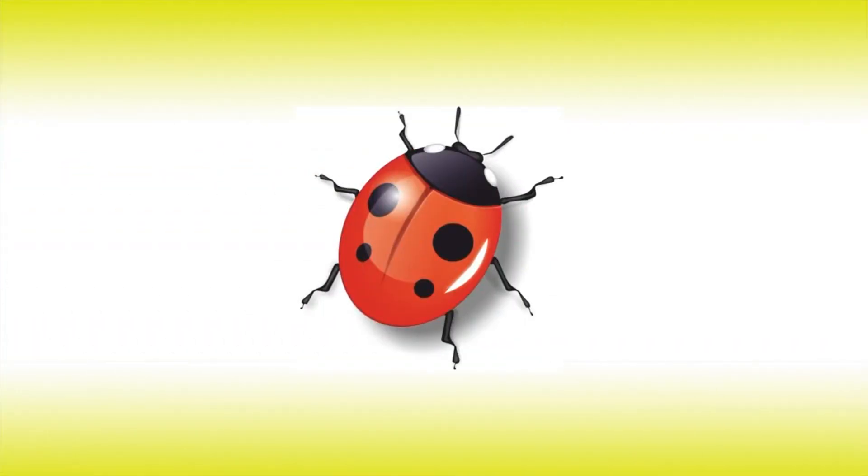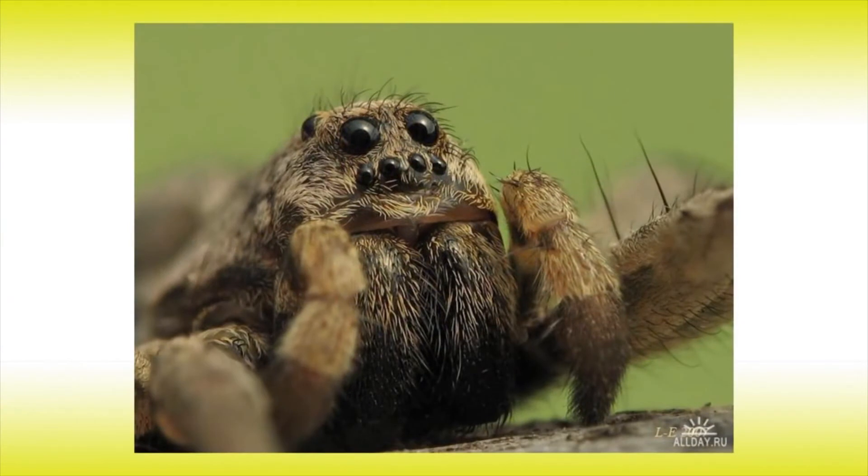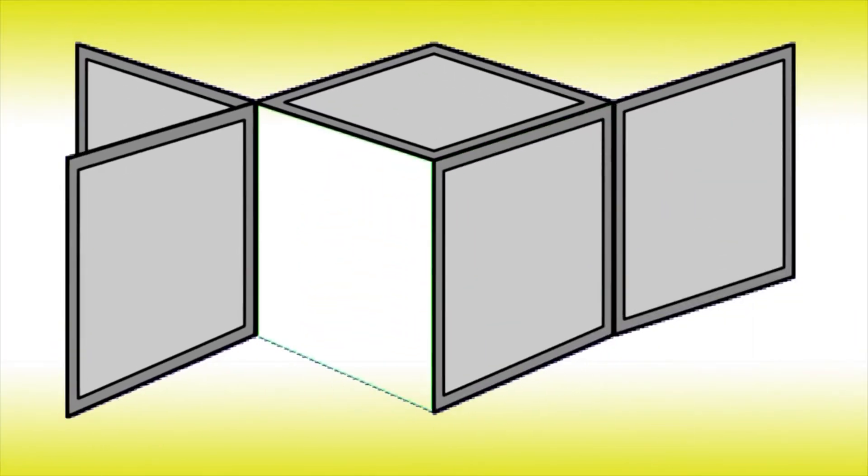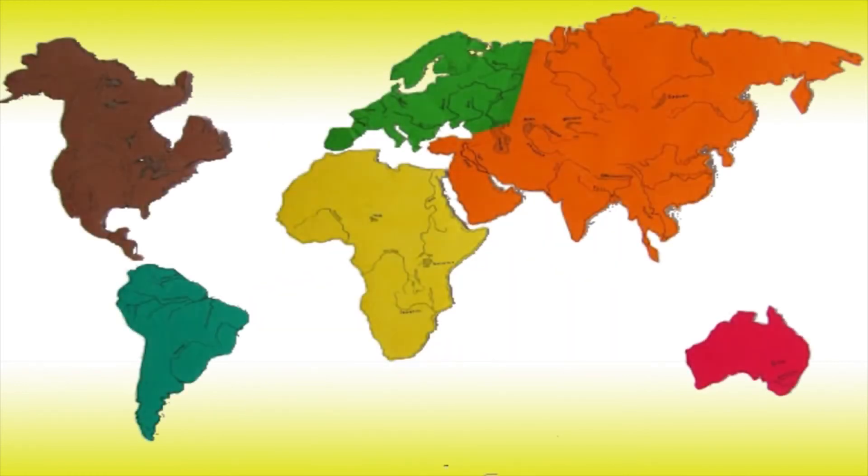A ladybug has six legs. A spider has six eyes. A flower has six petals. A cube has six sides. There are six continents on earth.